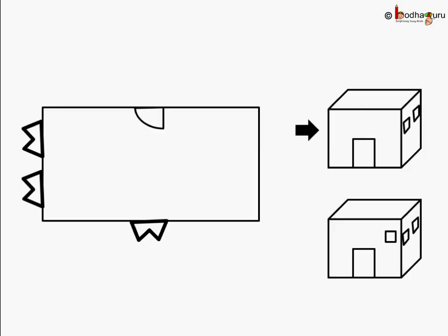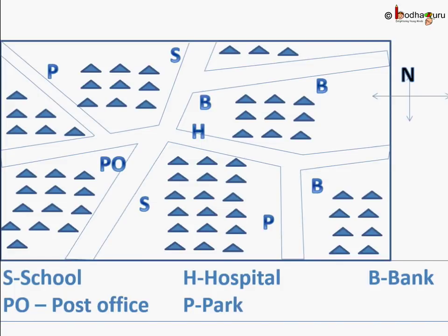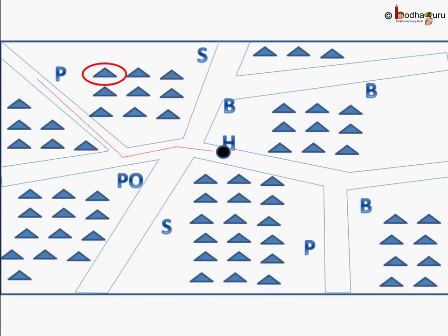We use symbols in maps. Aman made a map of his small town. H means hospital, S means school, PO means post office, P means park, B means bank, and triangle marks mean pakka houses. Remember, north side is always up. Aman is standing near the hospital. One bank is in the north of the hospital.